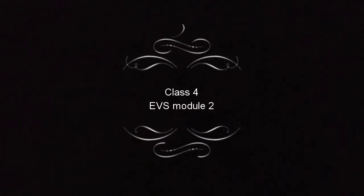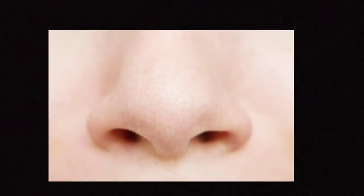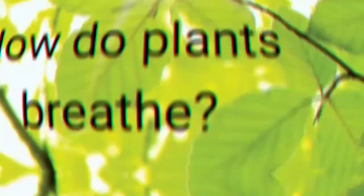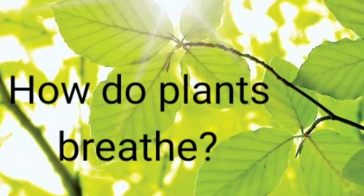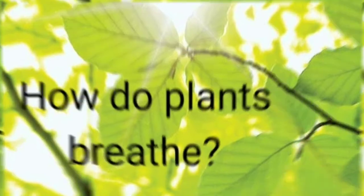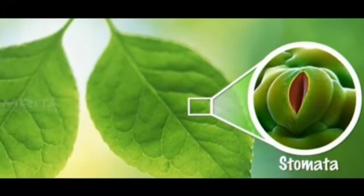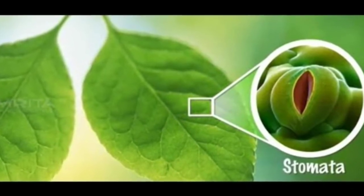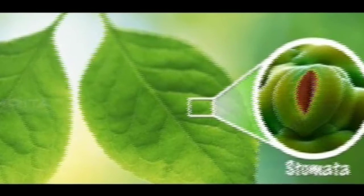Now we can move to second module. Children, how do we breathe? We breathe through our nose. Like animals, plants also breathe through a tiny opening called stomata, which is present on the underside of every leaf. They are like nostrils of a plant which help them to breathe.